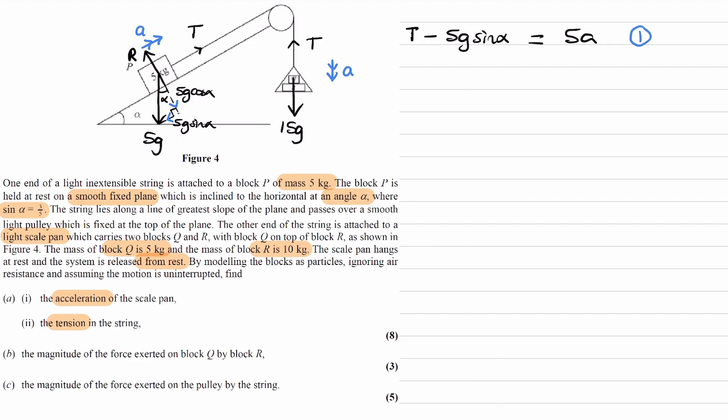And then for the other mass, we have the resultant forces downwards in the same direction as the acceleration. So we would do 15G minus T. That's the overall downwards force. That will equal to that mass multiplied by its acceleration. And that is equation 2.